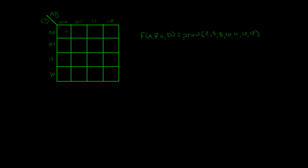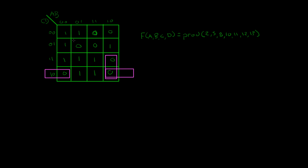I'm going to put the zeros right in: 0, 1, 2, 5, 6, 7, 8, 8, 10, 11, 12, 12, and 13. Now we can put our ones in, but I'm actually going to use the zeros to find the product of some terms, or the max terms. Looking at the map, we have the pair that wraps around here, this pair, this pair, this pair, this pair, and this pair.